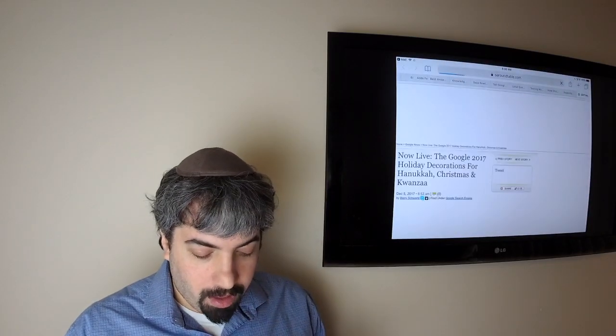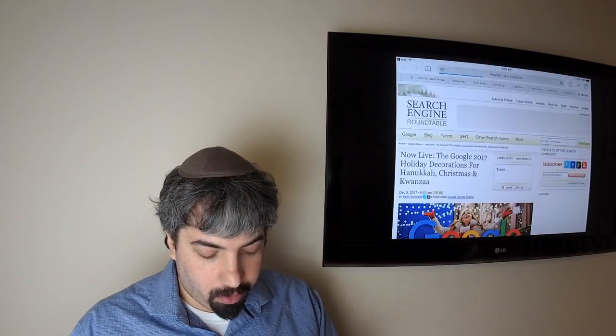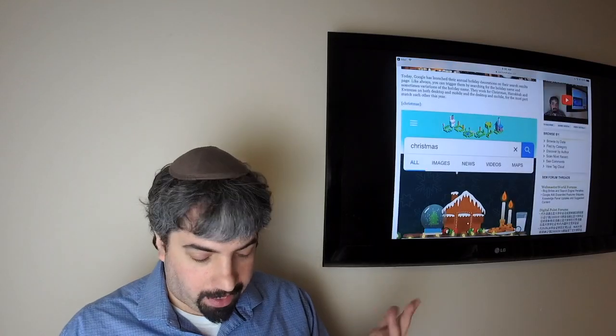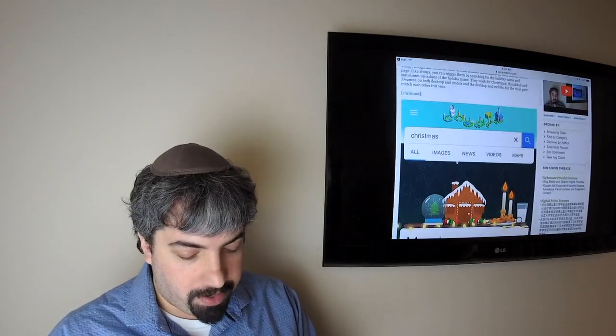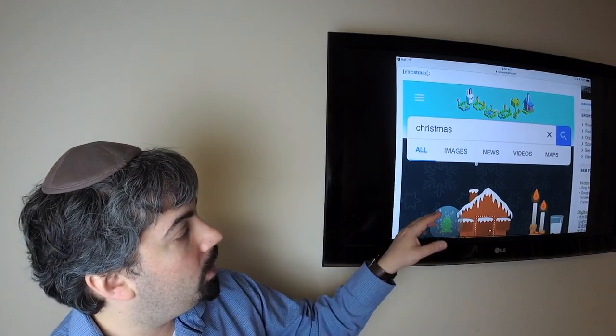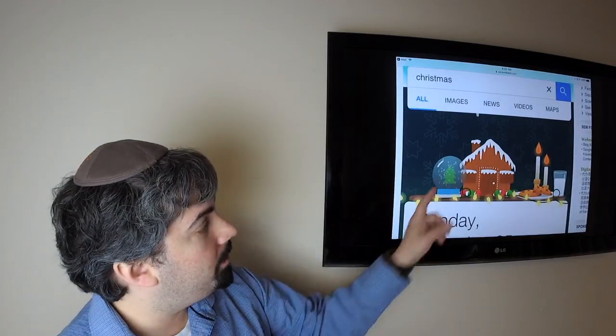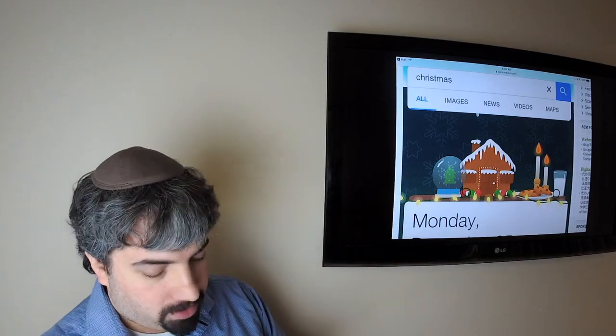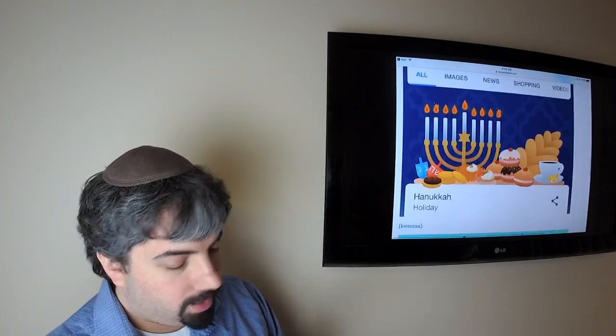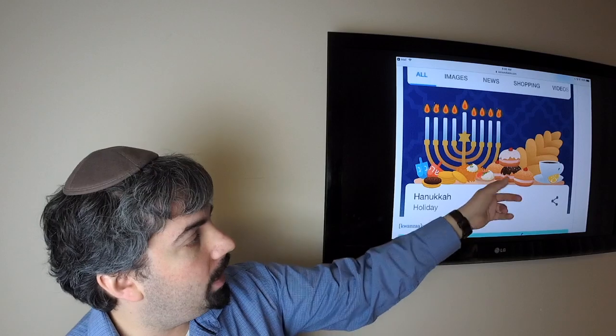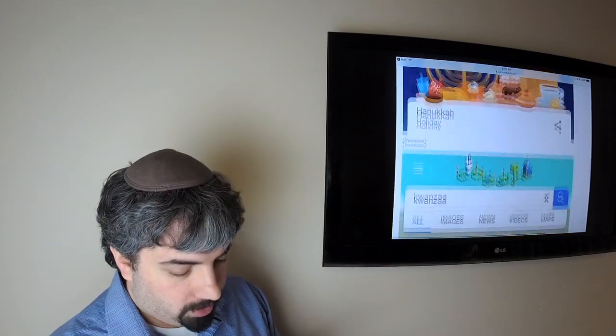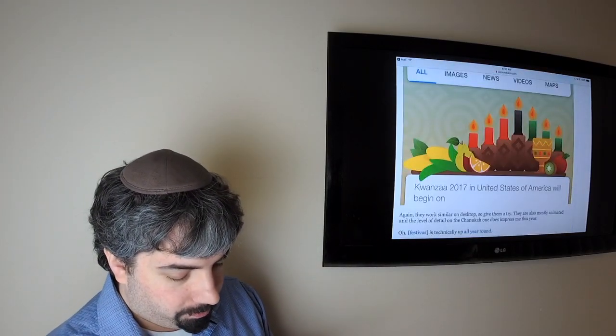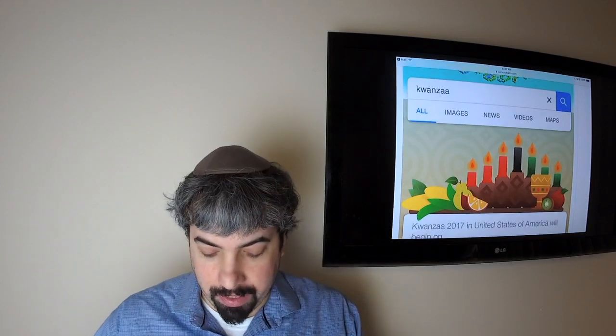The Christmas, Hanukkah, and Kwanzaa decorations are live on Google. Every year they decorate their search results both on desktop and mobile. Here's the UI for the banner around the Christmas theme in Google, here's the Hanukkah theme with menorah and jelly donuts and dreidels, and here's the Kwanzaa theme as well. If you do these searches on desktop and mobile, you'll get those decorations.